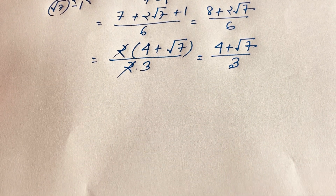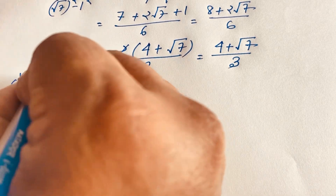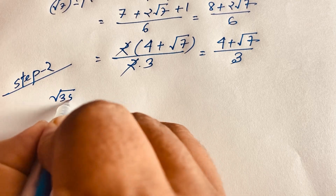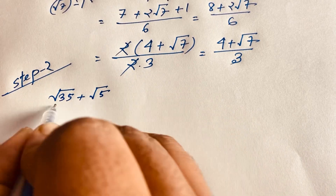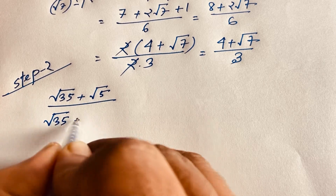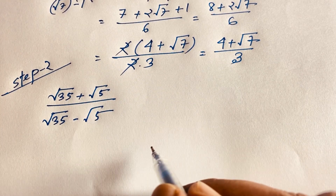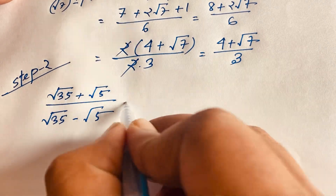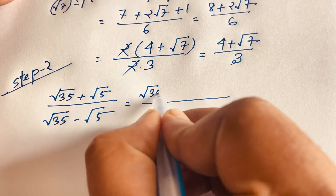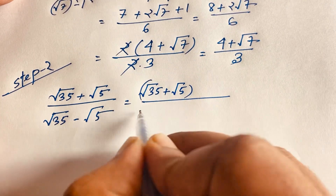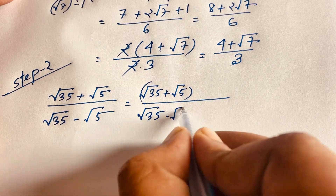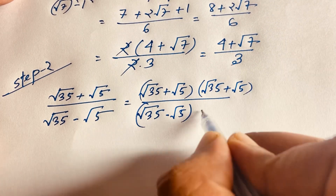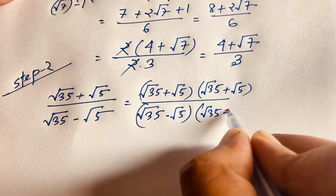Now I will solve this question using another method. Our question is again: square root of 35 plus square root of 5 over square root of 35 minus square root of 5. I multiply numerator and denominator by square root of 35 plus square root of 5.